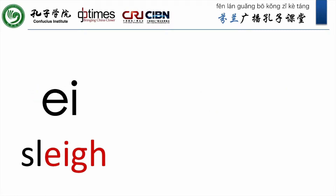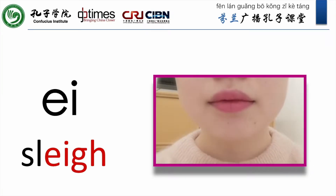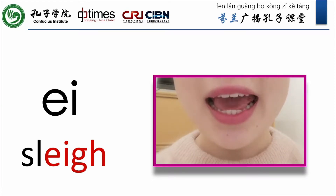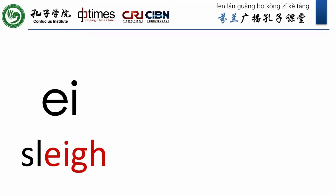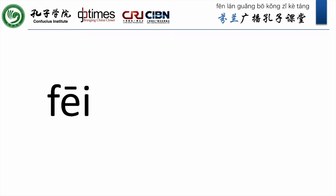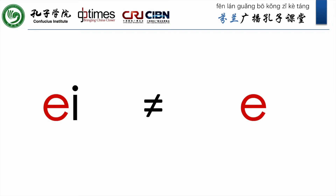ei. This sound is close to the vowel sound in the English word 'slay'. ei, ei, ei, fei, bei. In this diphthong, the sound value of the letter 'i' differs from that in the final.